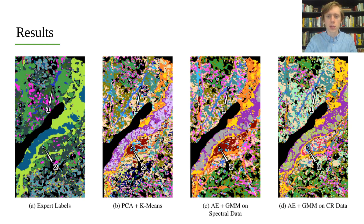Our pipeline also outperforms PCA k-means for both pre-processing setups in F1, normalized mutual information, and adjusted RAND index. Full evaluation details and additional method comparison on the remote sensing data are available in our paper.